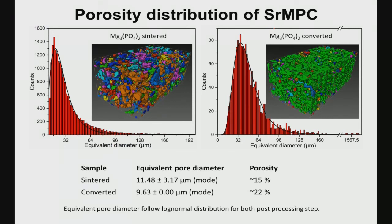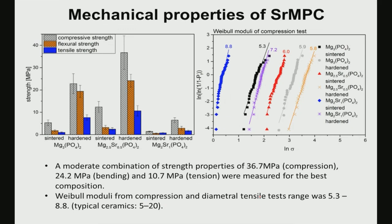Quantification of pore size and pore diameter shows values up to 130–140 microns for both sintered and converted scaffolds, with porosity fractions of about 15% versus 22%, and strut sizes of 11.5 microns (sintered) versus 9.6 microns (converted). Weibull modulus analysis gives strength reliability values (m) of around 5–9, which is important because additive manufacturing is a newer technique and strength reliability is a major concern.